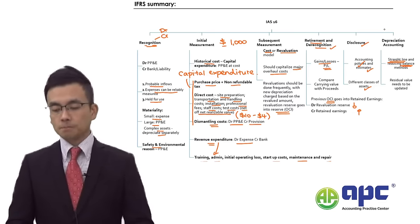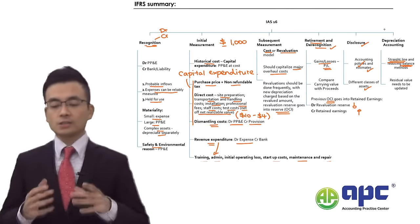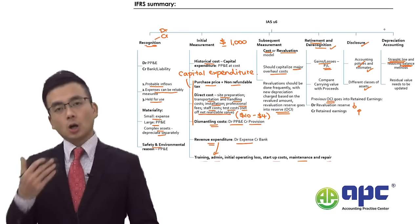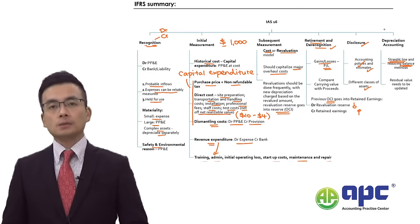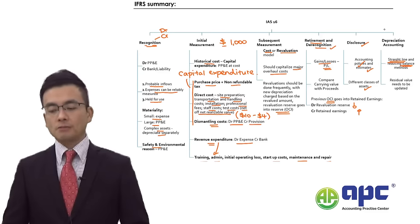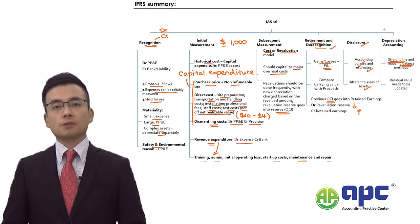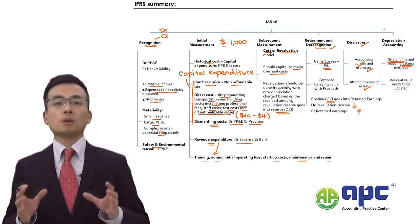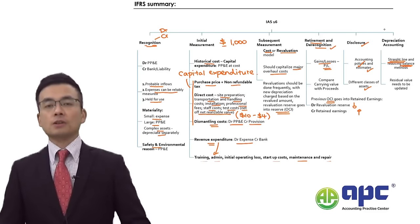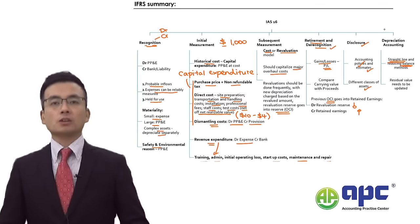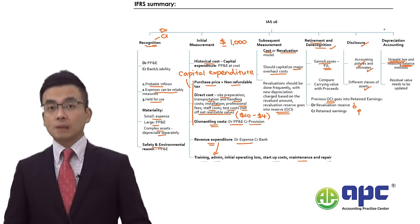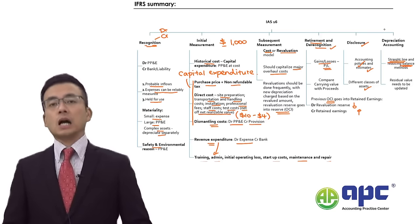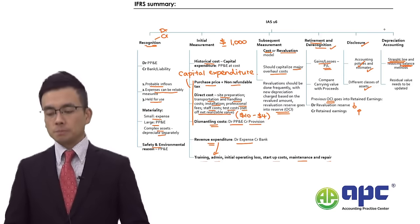Disclosure includes the useful life of the PP&E and the estimated residual value. You must also disclose different classes of assets: the property category, plant category, and equipment category. For depreciation, IAS 16 allows primarily the straight-line method and the reducing balance method, though other methods acceptable under IFRS may also be used.